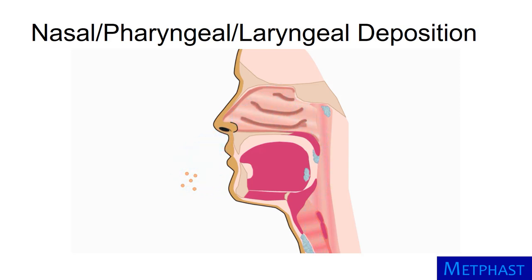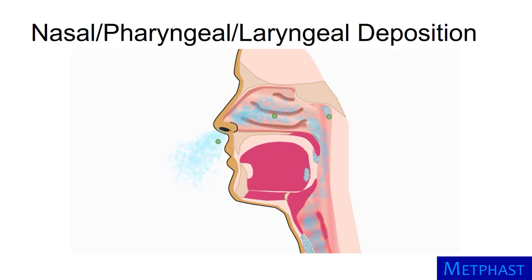Large particles have a significant amount of inertia. Some of these particles will deposit in the pharynx or larynx as air is inhaled. In addition, some will deposit there as air is exhaled.